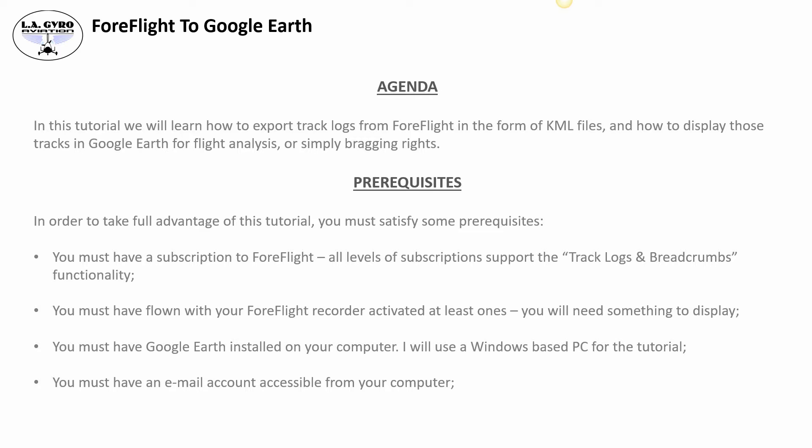In order to take full advantage of this tutorial you must satisfy a few prerequisites. You must have a subscription to ForFlight — all levels support track logs and breadcrumbs functionality. You must have flown with your ForFlight recorder activated at least once, since you need something to display. You must have Google Earth installed on your computer, Mac or PC. For this tutorial I will use a Windows-based PC. You must also have an email account accessible on both your computer and your iPad.